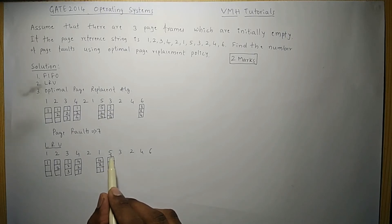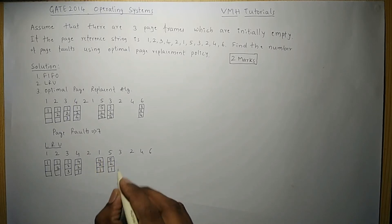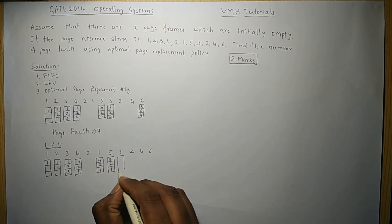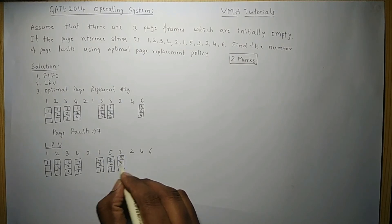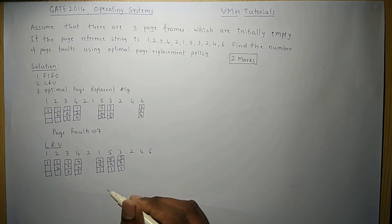The next reference is for page 3, which is not available — page fault. Page 5 was used most recently, then page 1, and page 2 was used least recently. So page 2 is replaced with page 3. The frames now hold 5, 3, and 1.